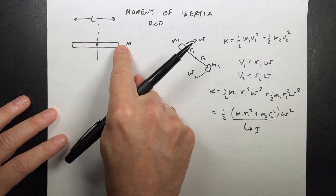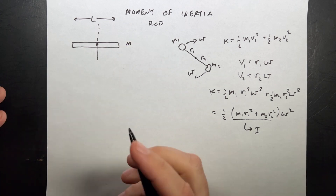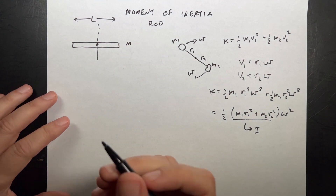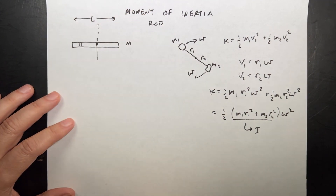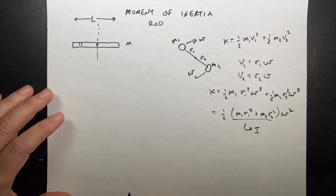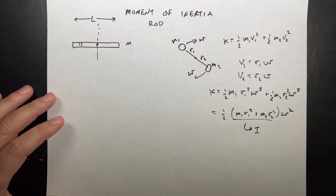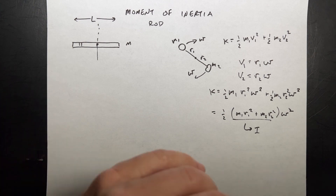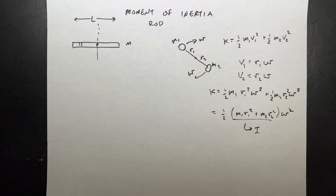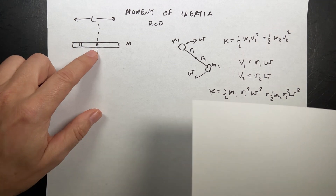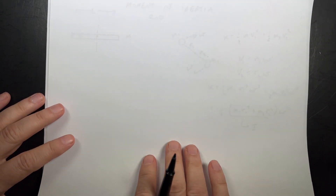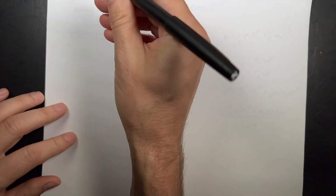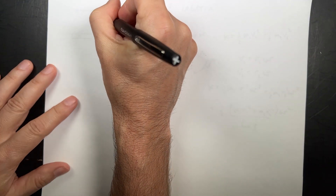If you have a finite number of masses, you just add up M·R² for the whole thing. But if you have a continuous distribution, then we need to break that into tiny little pieces and find the moment of inertia for each piece. It's going to end up being an integral. So let's do that about the center for this rod.